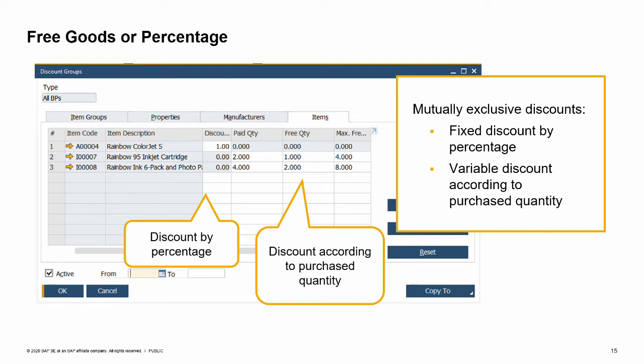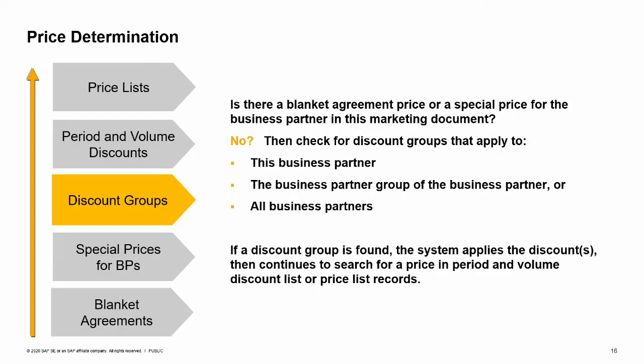When the system searches for a price, it looks for the most specific type first. First, the system looks for a price in a valid blanket agreement. If none is found, it checks for special prices for business partners. If none exist, then the system searches for discount groups. The system will look for discount groups that apply to the business partner, the business partner groups associated with that business partner, or a discount group that applies to all business partners. Once discount groups are found, the system applies the discounts and then looks for a price in the period and volume discounts or price list for the discounts to apply to.